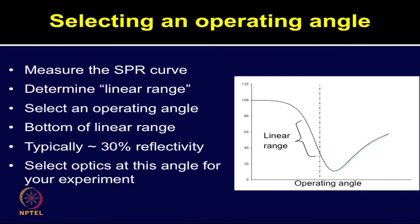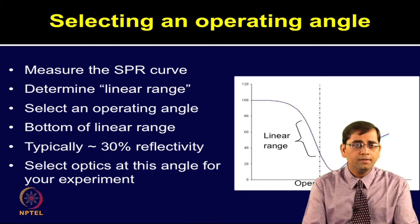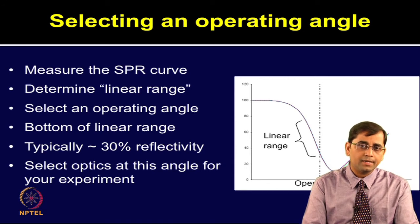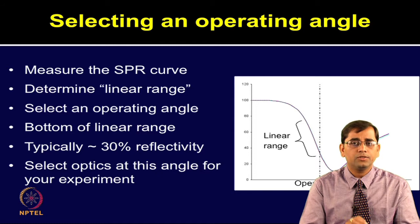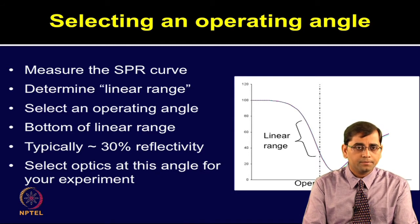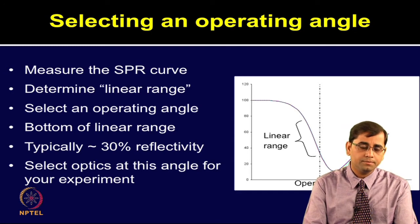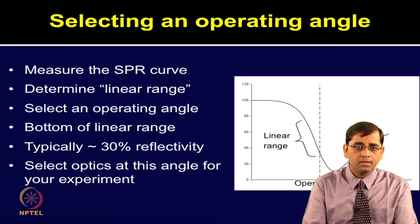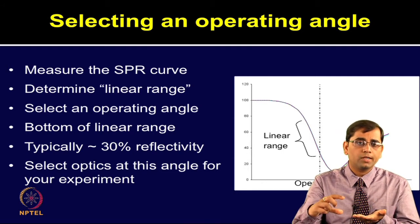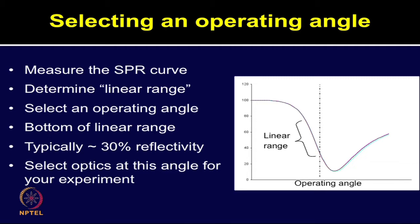In SPRi, the first and most crucial step is the selection of an operating angle. The SPRi device measures the SPR curve and determines the linear region. One needs to scan the whole optics through a range of angles and determine the linear range. A rough estimate is that typically around 30 percent reflectivity can be taken as the bottom part which represents the linear region. Select the optics at this angle for your entire experiment, so that all spots printed on the chip surface can be measured simultaneously.